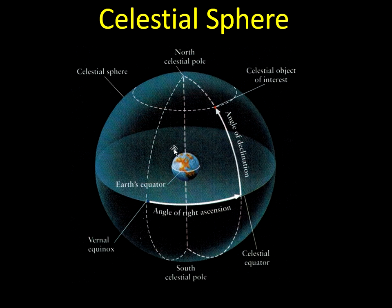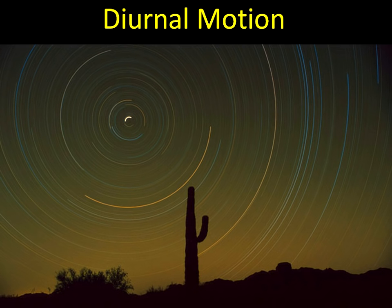As the Earth rotates at the center, it appears as though these more or less stationary stars are the things that are orbiting, even though it's really us — we are the ones that are rotating on the Earth due to the Earth's rotation. And so this is what the stars look like throughout the night due to the Earth's rotation. This is something called diurnal motion.